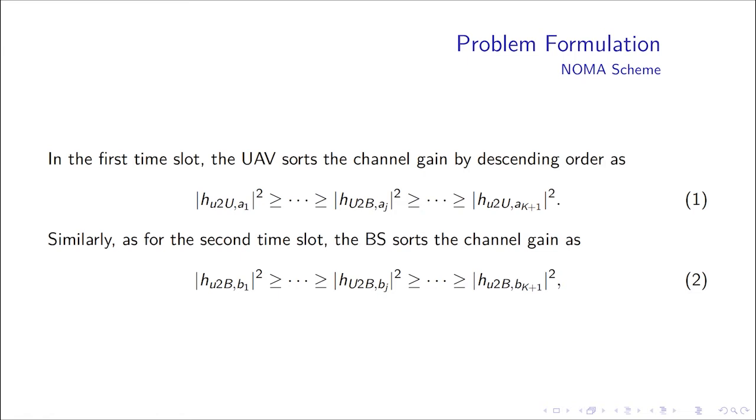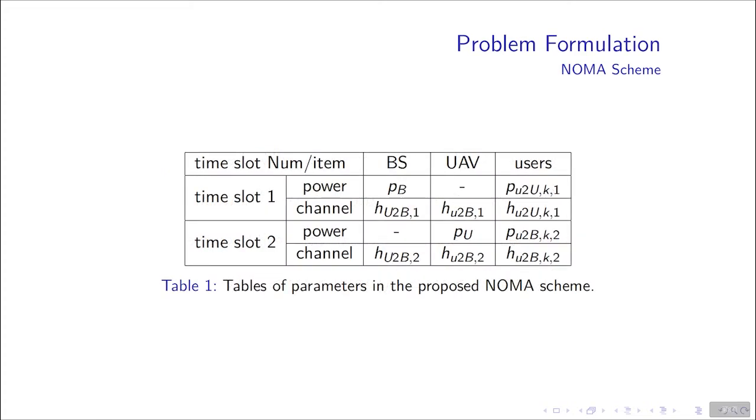The decoding order is the descending order of the channel gain factors of all the users and UAV. Table 1 shows the meaning of the parameters. At time slot 1, we use PB to represent the power from the base station, and use PU2UK1 to represent the power from the users. Here in the subscripts, the capital letter B means the base station. The lower case letter u means users, and the capital letter U means UAV.